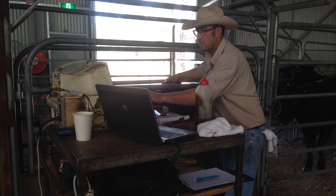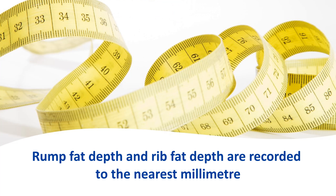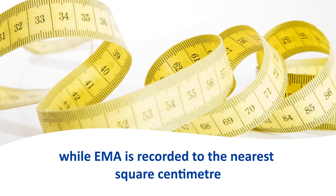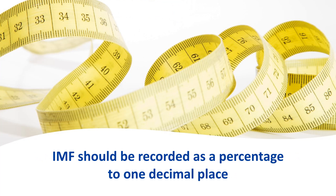Accredited ultrasound scanners are experienced at identifying the correct location to collect each of these measurements. Rump fat depth and rib fat depth are recorded to the nearest millimetre, while EMA is recorded to the nearest square centimetre. IMF should be recorded as a percentage to one decimal place.